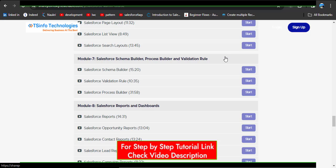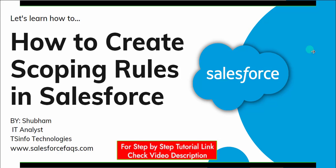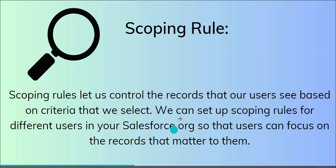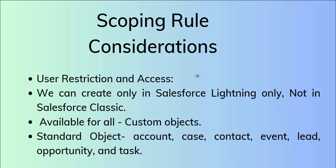Let's jump to the topic. So what is a scoping rule? A scoping rule lets us control the records that our users see based on criteria that we select. We can set up a scoping rule for different users in your Salesforce org so that users can focus on the records that matter to them.